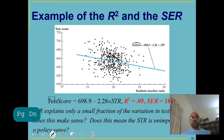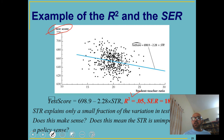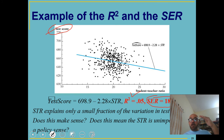R-squared of 0.05 means 5 percent of the variation in test score is explained by class size. The standard error of regression is 18.6, meaning predictions may be plus or minus two standard errors — about 37 points above or below your guess — which is a very large value. Smaller the standard error, the better and more precise your results.